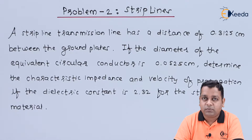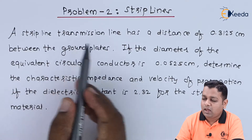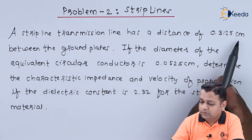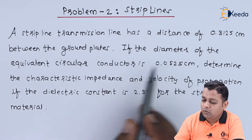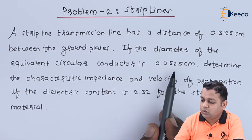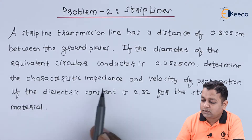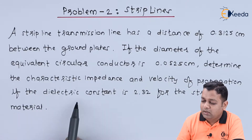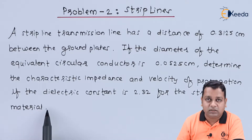Here we have the problem statement. A strip line transmission line has a distance of 0.3125 centimeters between the ground plates. If the diameter of the equivalent circular conductor is 0.0525 centimeters, determine the characteristic impedance and the velocity of propagation if the dielectric constant is 2.32 for the strip line material.